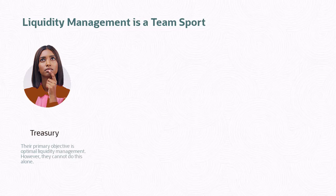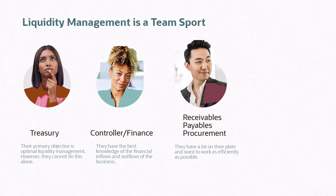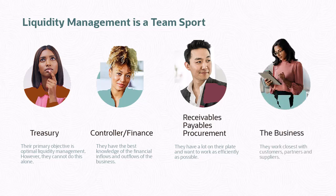Corporate Treasury's primary objective is optimal liquidity management, but they can't do this alone. They need to collaborate with multiple stakeholders. Controllers or finance have the best knowledge of the financial inflows and outflows in the business. Receivables, payables, and procurement are very close to the transactions. Business people work closest with customers, partners, and suppliers. For example, if a receivable isn't paid, that might be due to a customer satisfaction issue.